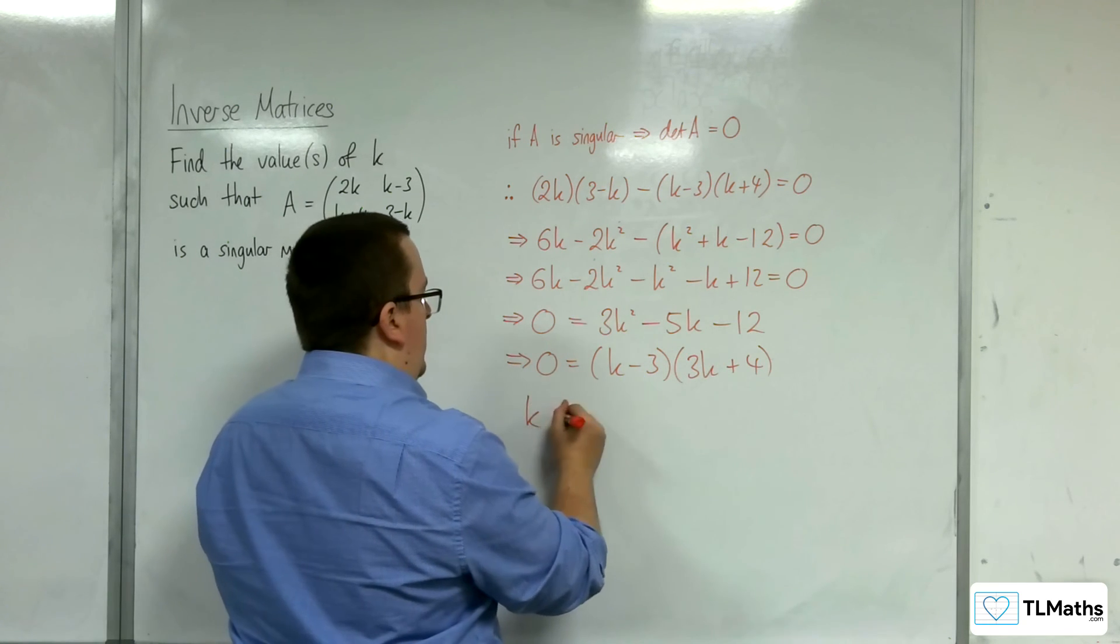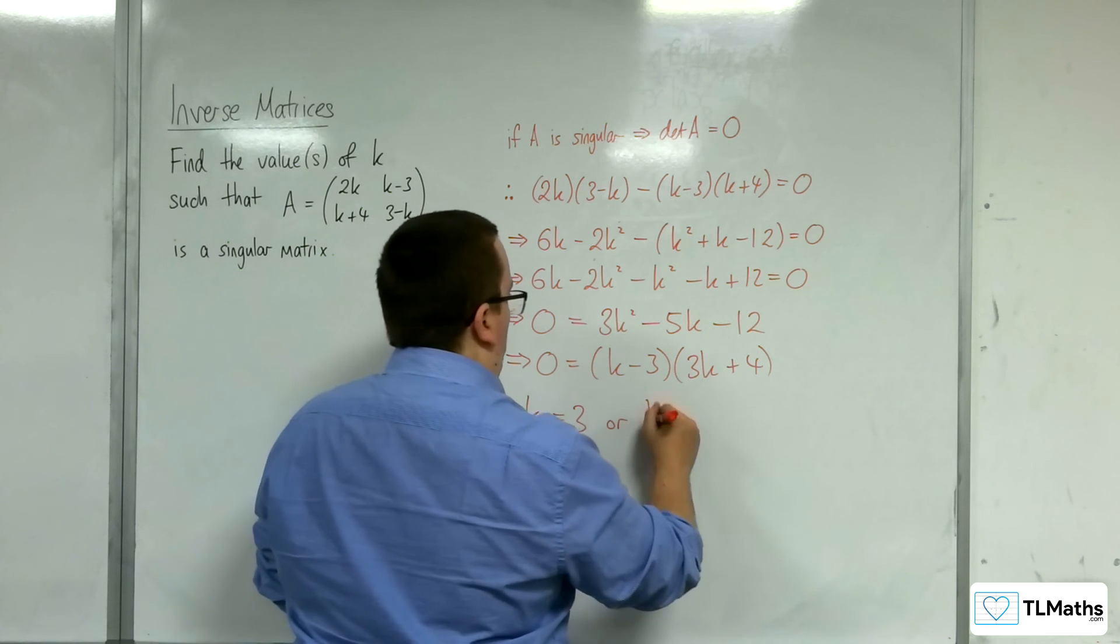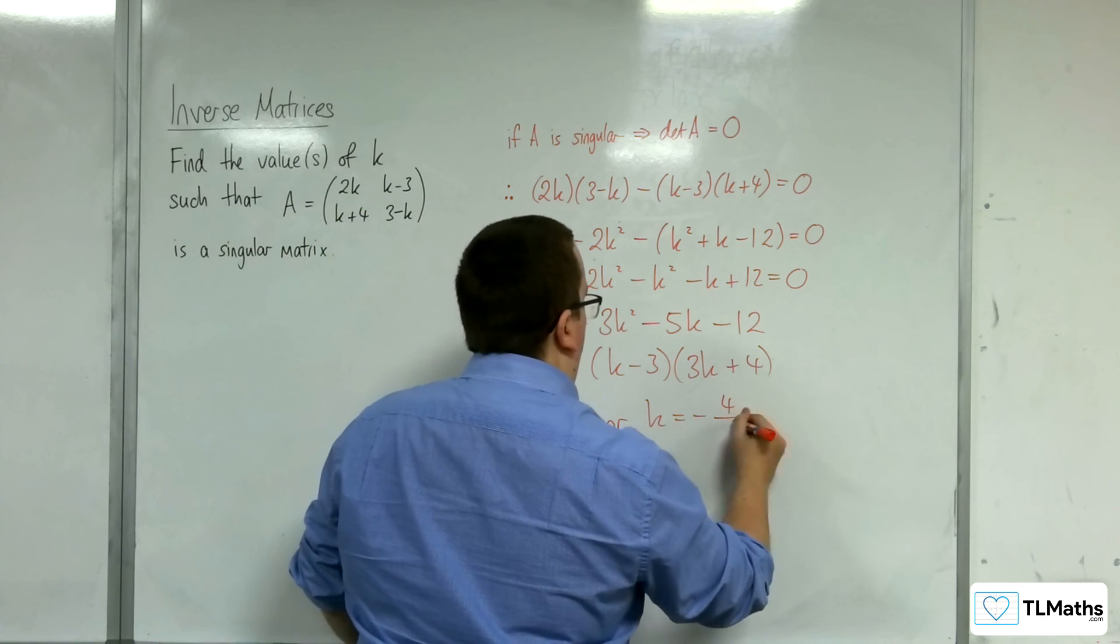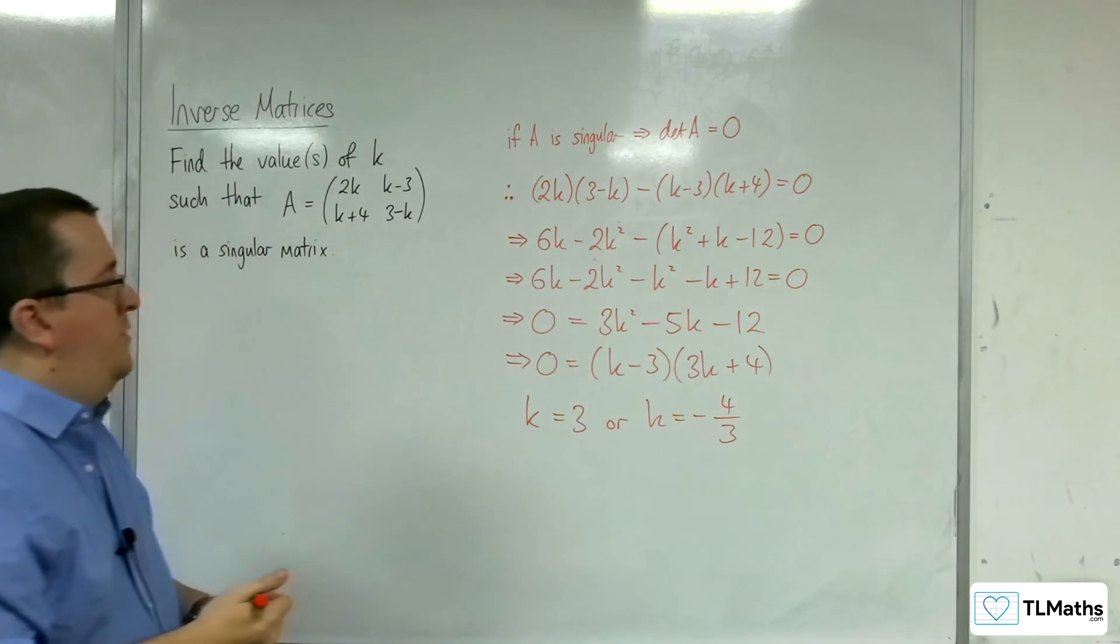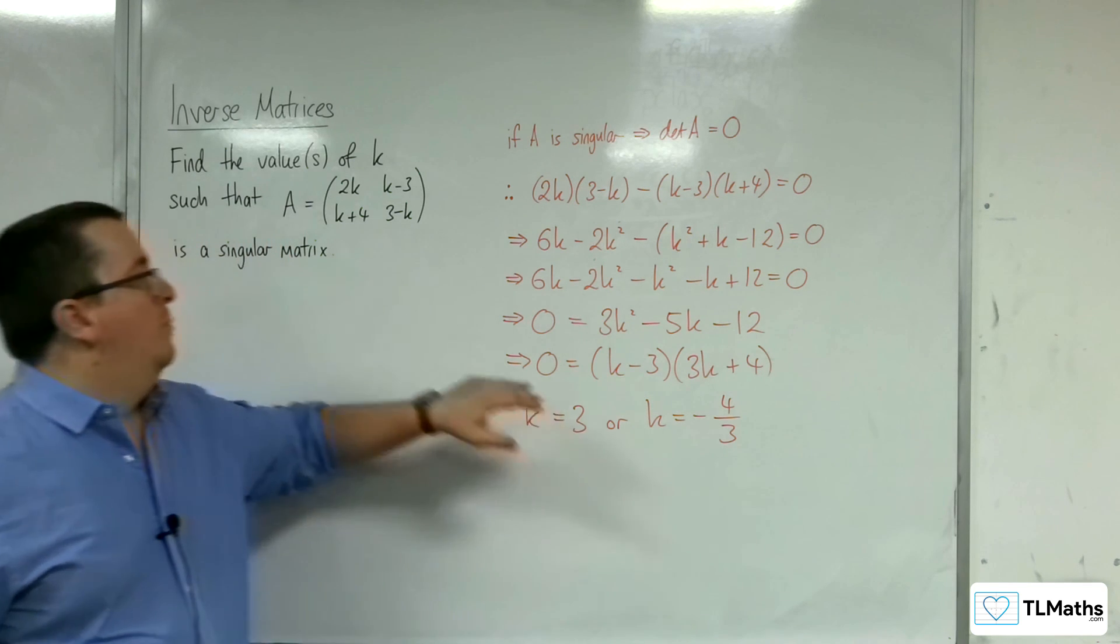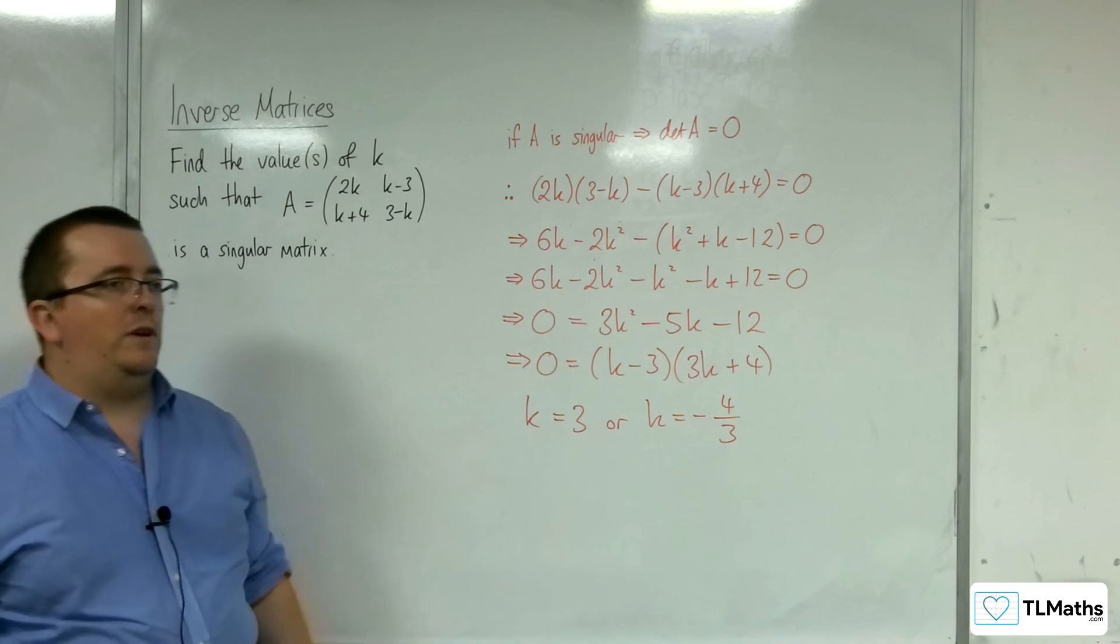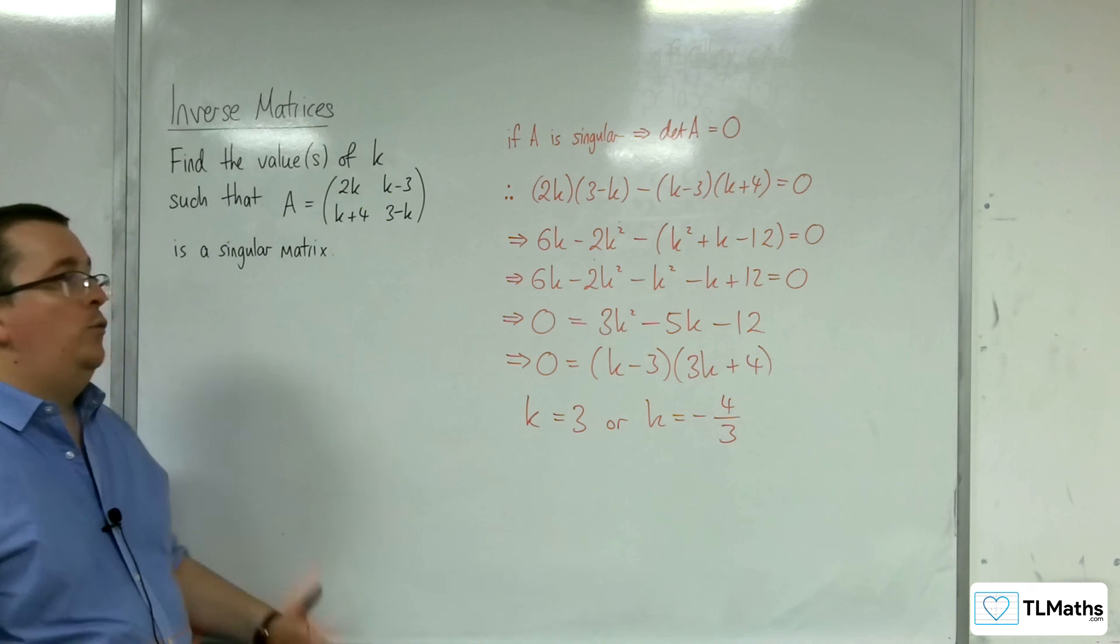So k equals 3, or k equals minus 4 thirds. These values of k will make the determinant of that matrix 0, and hence A would be singular.